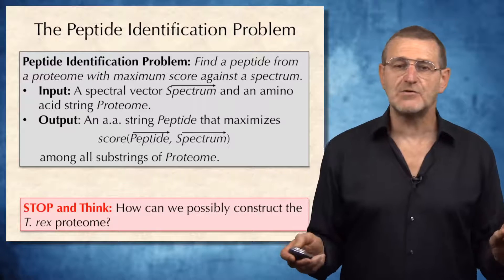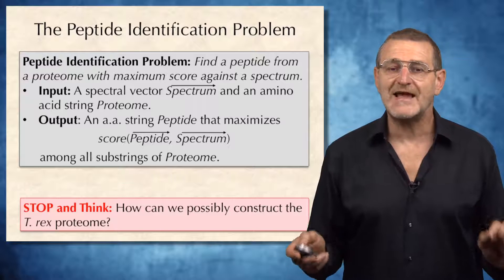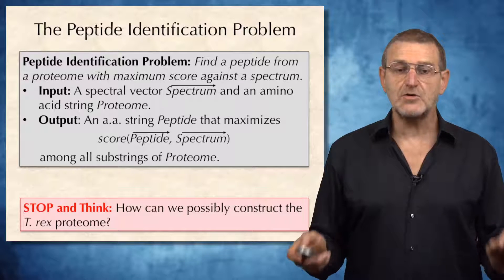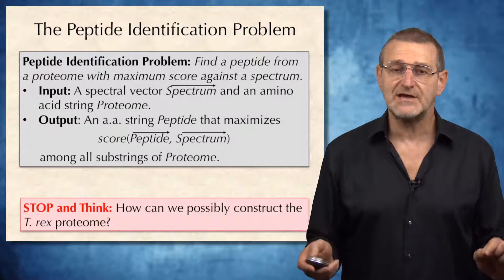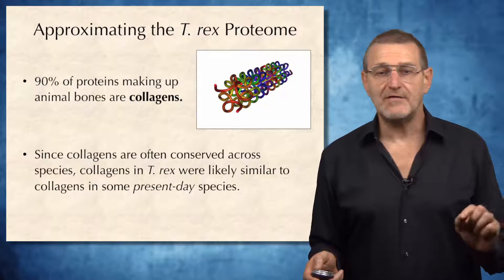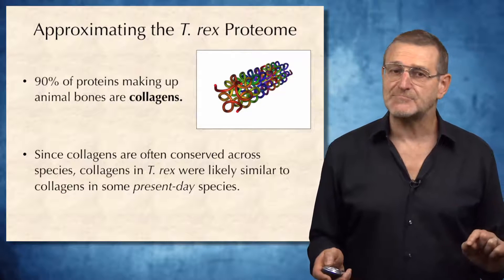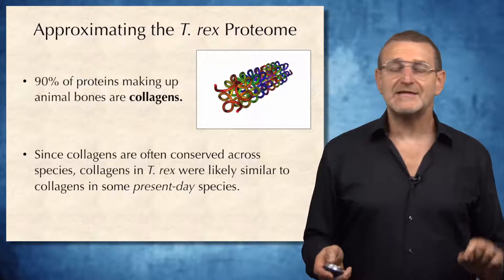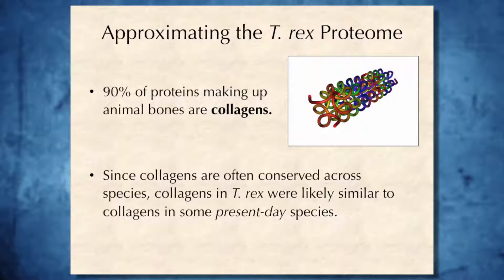However, even if we solve this problem, how will it help us, since we don't know what is the T. rex protein? However, we can approximate T. rex protein. Note that 90% of proteins making up animal bones are collagens, and collagens are very conserved across species. Therefore, collagens in T. rex were likely similar to collagens in some present-day species.